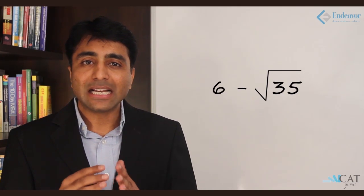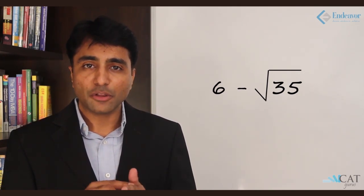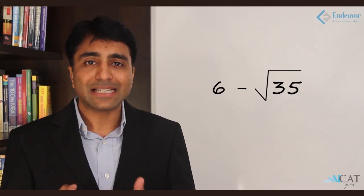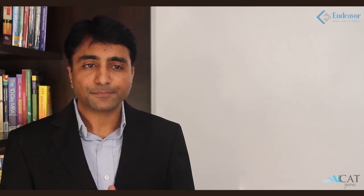Further, I will get 6 minus root 35 into 2 the whole upon 2, wherein 2 will get cancelled and my ultimate answer will be 6 minus root 35. So these were the three standard questions on surds and indices which you can come across in any competitive entrance exam. Thank you.